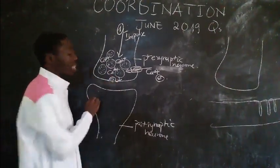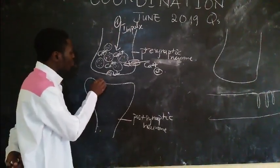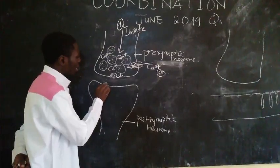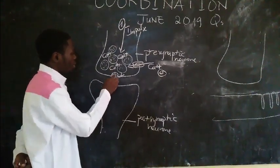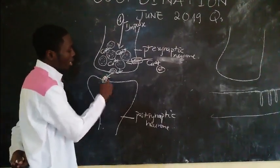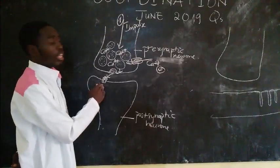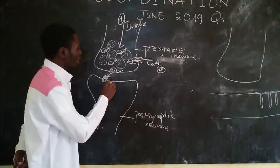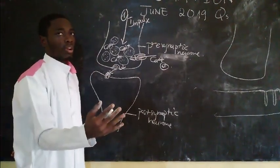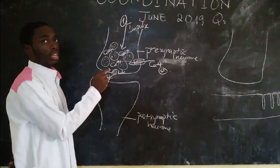Stage 4: the neurotransmitter diffuses across the synaptic cleft and binds to receptors on the postsynaptic membrane. These receptors are specifically there to bind the neurotransmitter. The binding of acetylcholine to these receptors causes ligand-gated sodium channels to open — they are called ligand-gated because they depend on a ligand like acetylcholine binding to open.